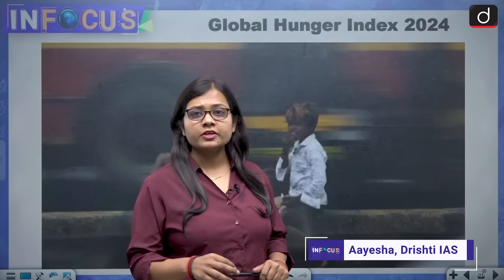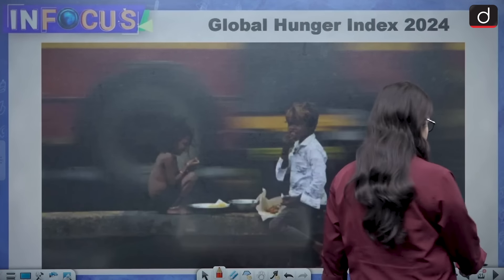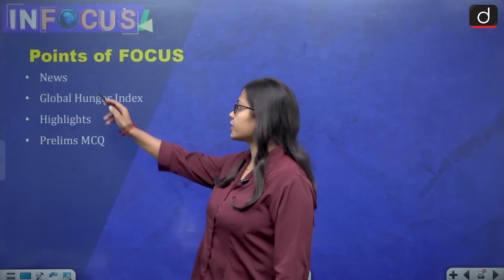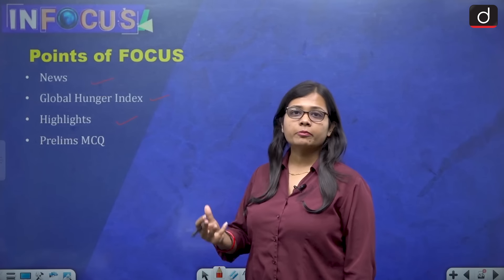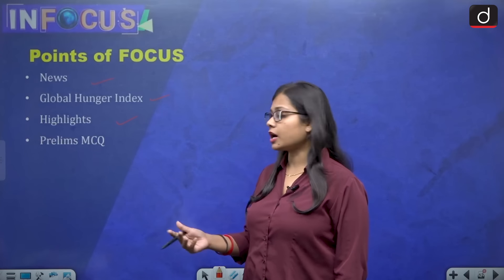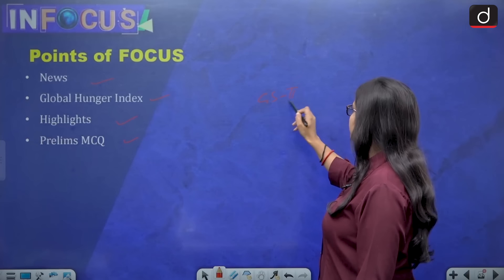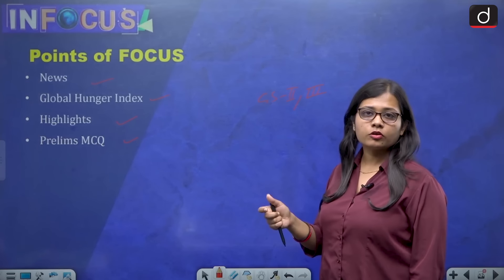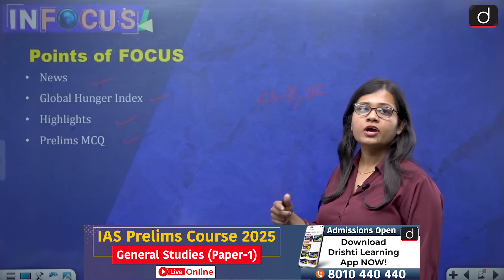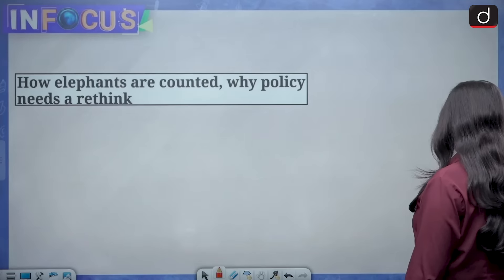Hello and welcome to the In Focus series section of Drishti IAS. I'm Aisha, and in today's episode we will be discussing the Global Hunger Index for the year 2024. Points of discussion include: the news, what is the Global Hunger Index, its highlights, the parameters on which it is based, and a prelims MCQ relevant to General Studies Paper 2 (nutrition) and Paper 3 (economy and society), covering undernourishment, child mortality, stunting, and wasting.